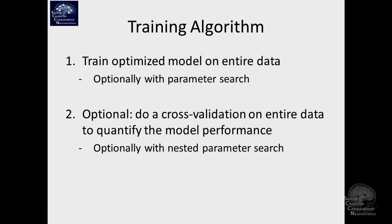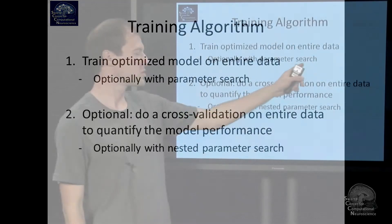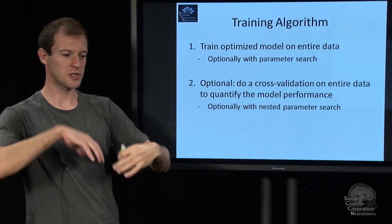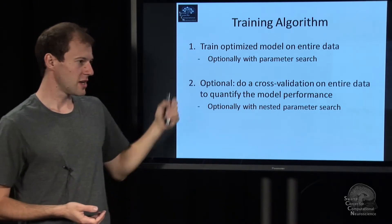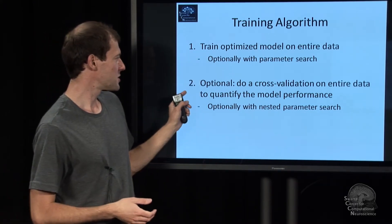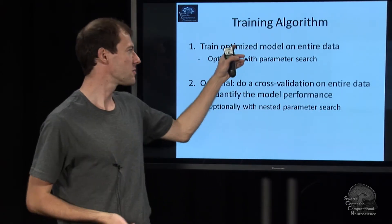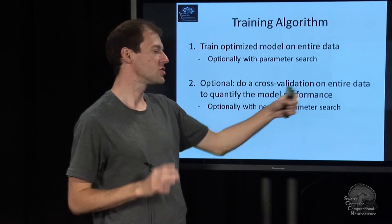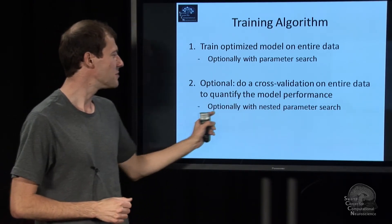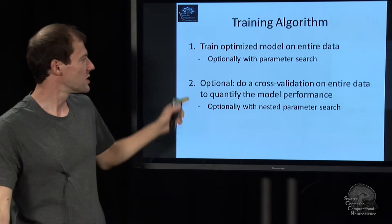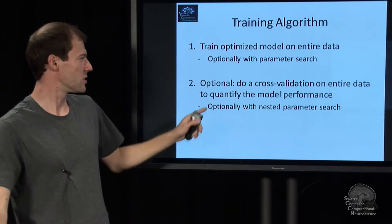Two more things: the training function not only gives you a model but also evaluates performance. It takes the entire data, trains an optimized model — possibly using parameter search to optimize unknown parameters. Then optionally it does a cross-validation on the data, chops it up, and evaluates how well that model would work, using subsets of the data internally. It may use nested parameter search in there as well, doing two loops in a sense.